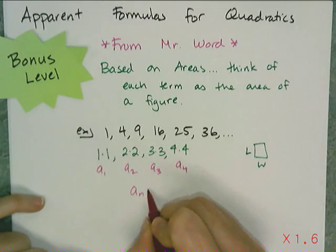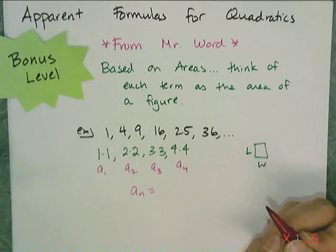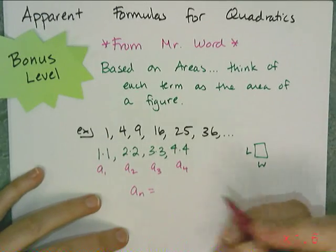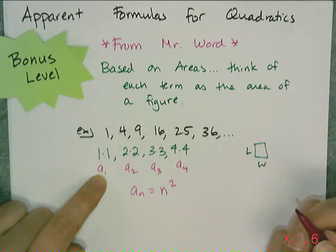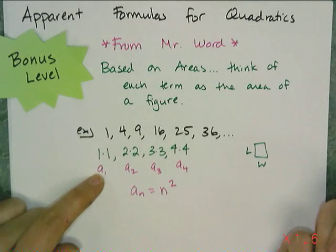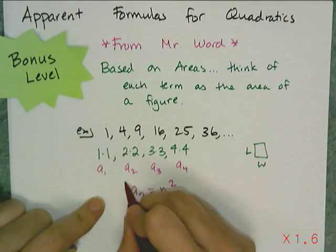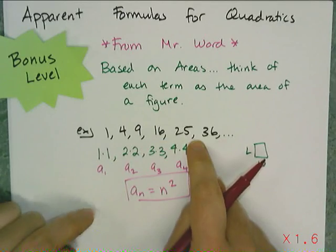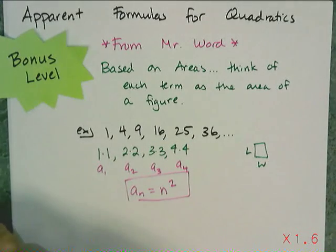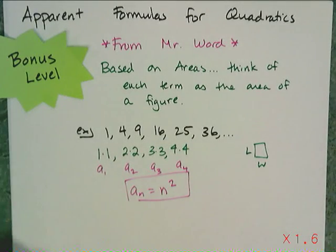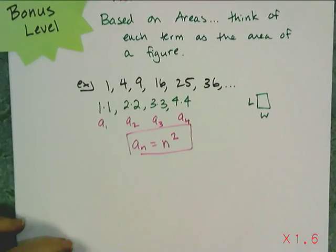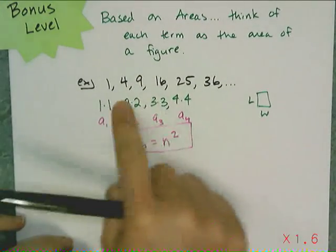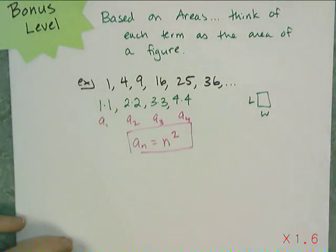So what is the apparent formula for this most basic of the quadratics? I take the stage number and I square it — I multiply it by itself. And that's the apparent formula for this sequence. Now they're not all based on squares, because that would be kind of lame. It would just be these numbers shifted around — no fun.